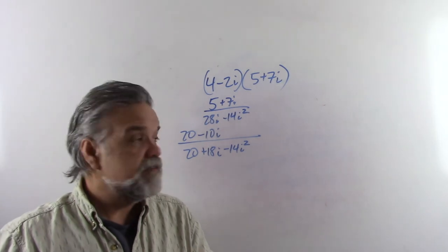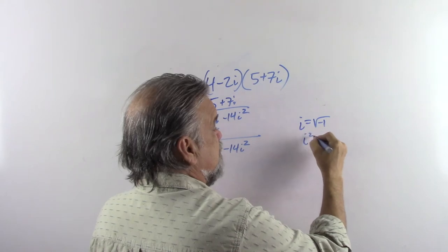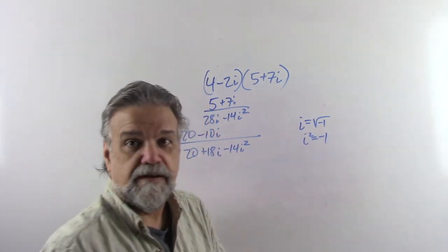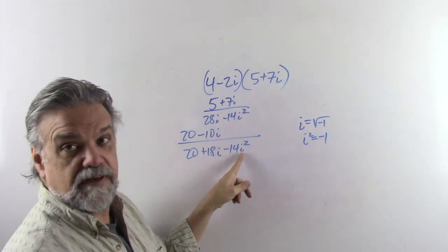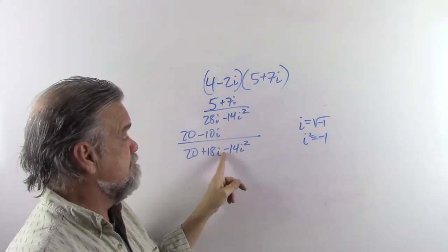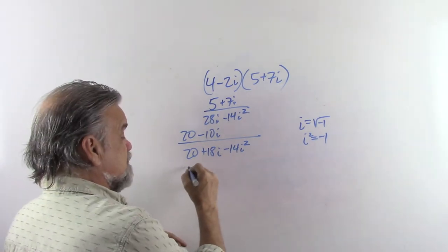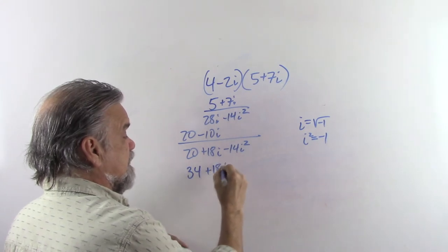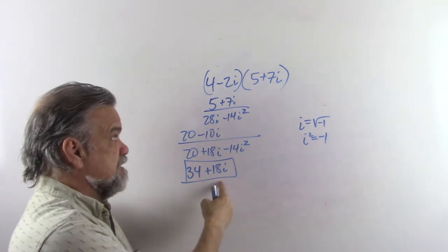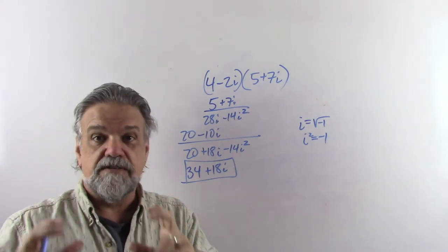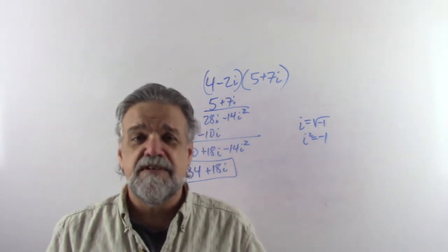Remember what i² is: if i is the square root of negative 1, then i² must equal negative 1. So negative 14i² becomes negative 14 times negative 1, which is just positive 14. Minus negative 14 is plus 14, so we get 20 plus 14, which is 34, plus 18i. That's our answer — real part plus imaginary part.